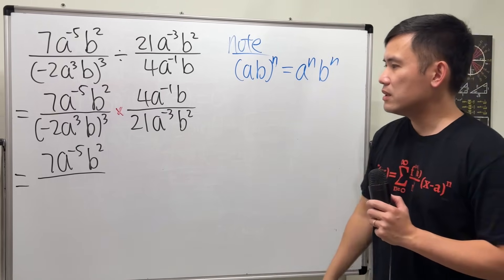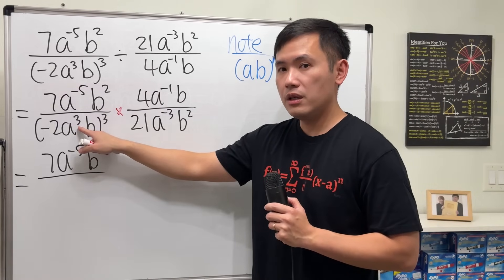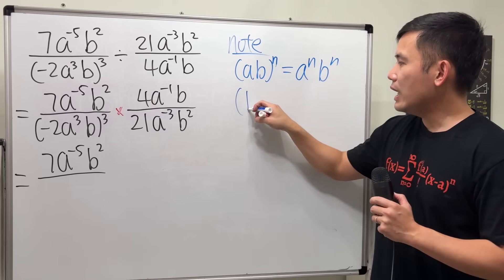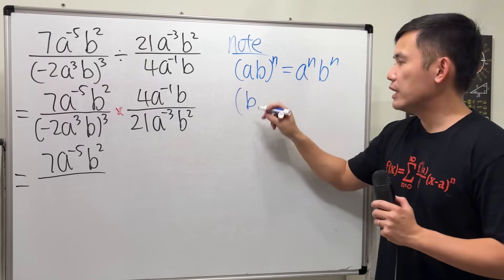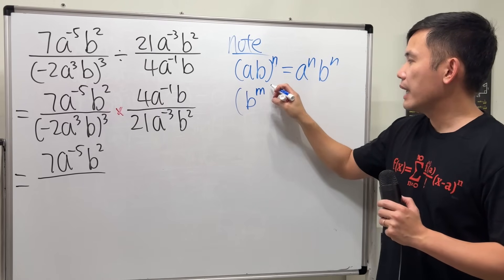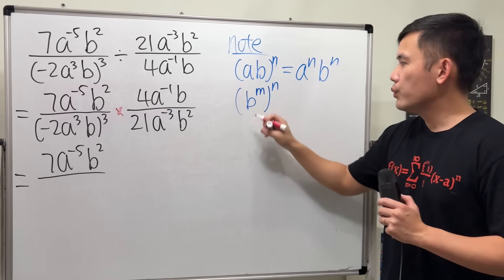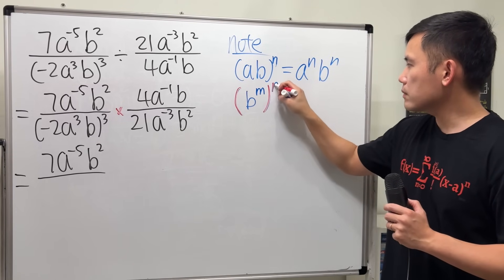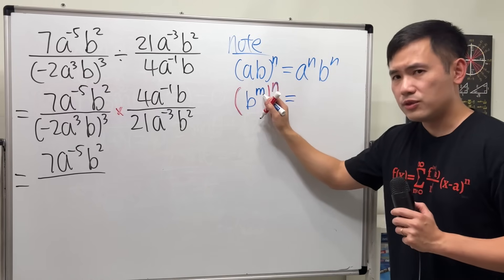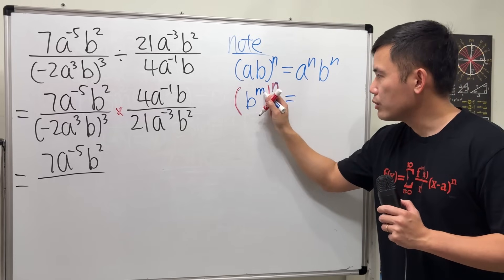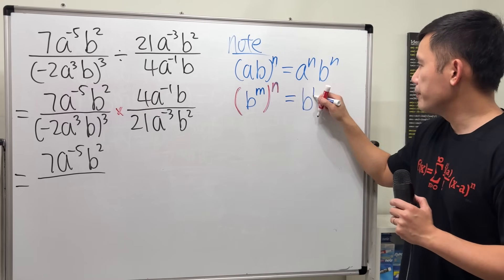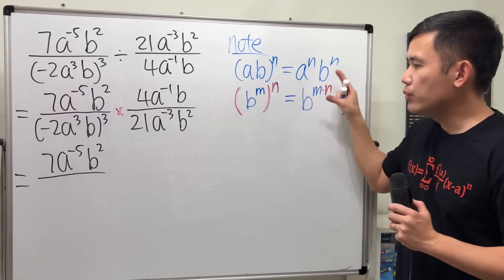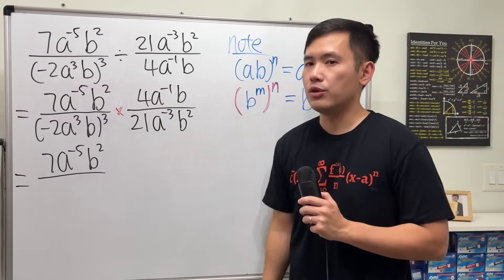The second thing we need: notice how we have an exponent here already and then another exponent. We need the following rule. Let's say we have some base b raised to some number m, and then raised to the n-th power. We usually call this the power to a power rule. What we are going to do is multiply the exponents — you cannot distribute the power. So this is b to the m times n.